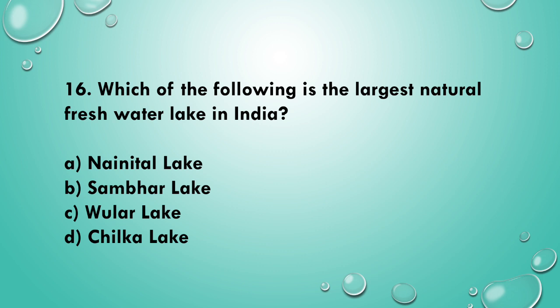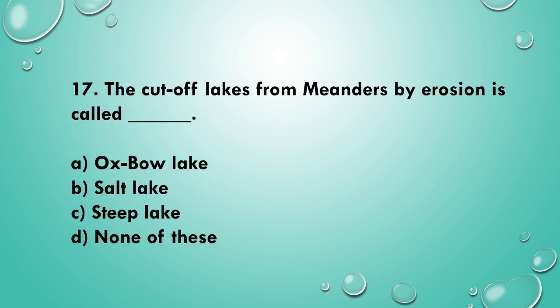Question 16: Which of the following is the largest natural freshwater lake in India? Question 17: The cutoff lakes formed from meanders by erosion are called? The answer is option A, Oxbow Lake.